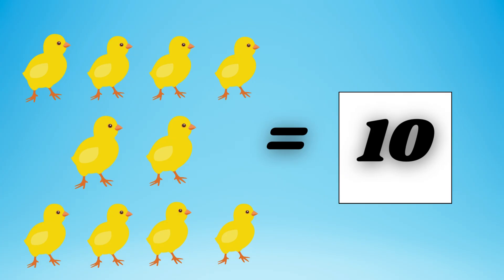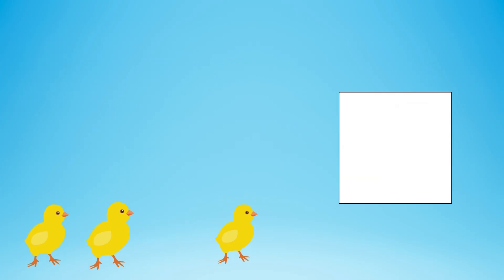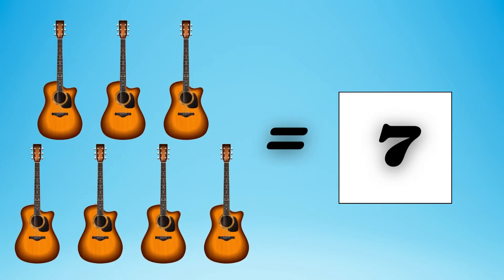5, 6, 7, 8, 9, 10 — equal to 10 chicks. Count the guitar: 1.